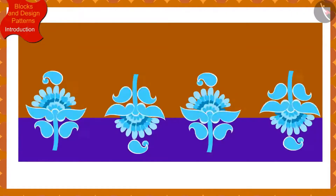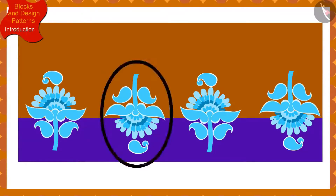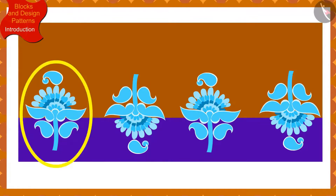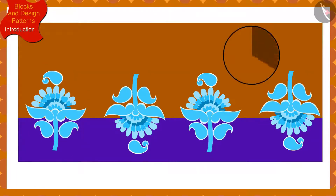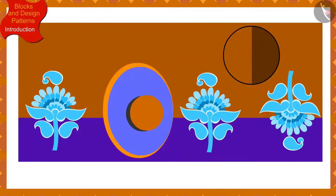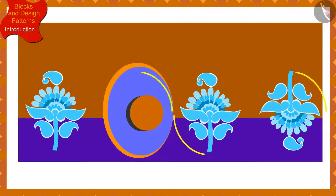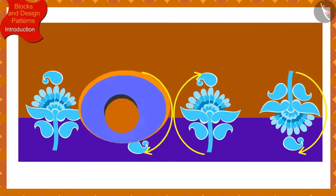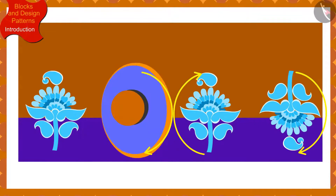If we look closely, we will find that this impression has been made by rotating the previous impression by half in the clockwise direction. In order to create this pattern, Banno has rotated the block of the design by half in the clockwise direction each time.